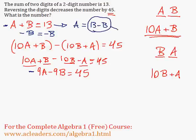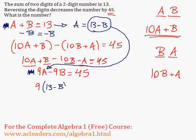Which I will just plug in here. So 9 times A, and our A is 13 minus B, minus 9B equals 45.